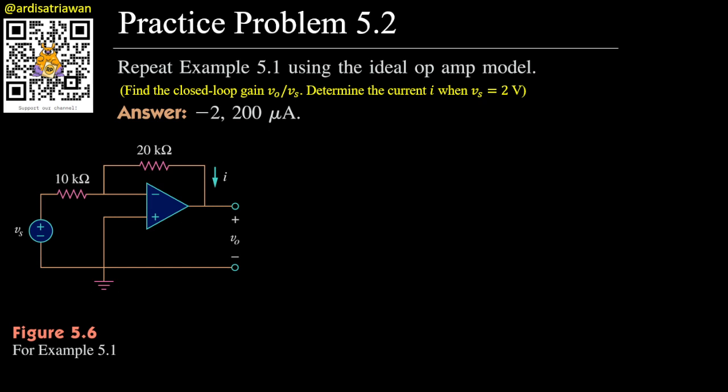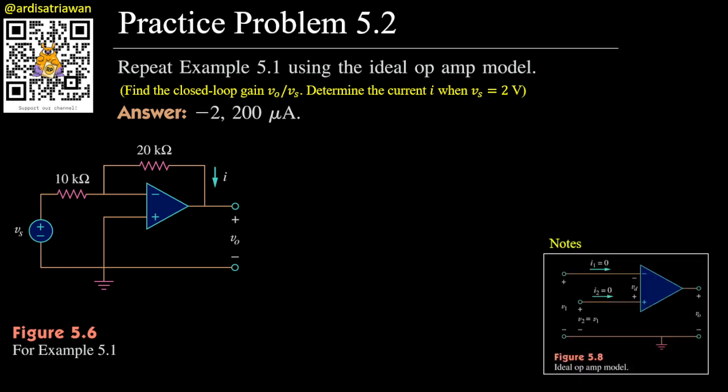Let's write that vs is equal to 2 volts first. We take note that we have an ideal op amp. What is an ideal op amp? We have this ideal op amp where the current that goes into the op amp here is zero and the current that goes here is also zero.